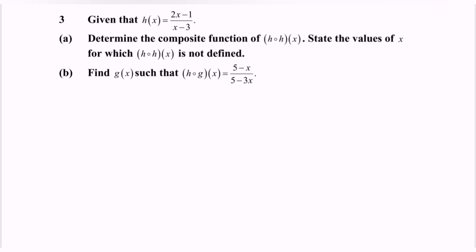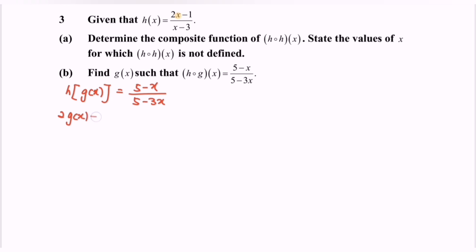Referring to part (b): find the function g(x) such that h∘g equals the given function. So h(g(x)) equals (5 minus x) over (5 minus 3x). This means g(x) needs to be substituted into h, giving us [2·g(x) minus 1] over [g(x) minus 3] equals (5 minus x) over (5 minus 3x).